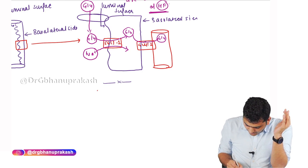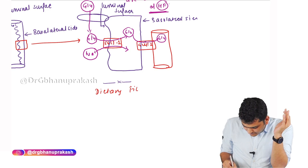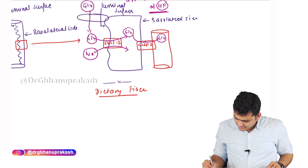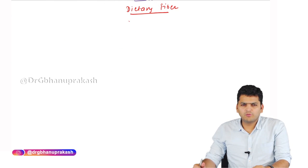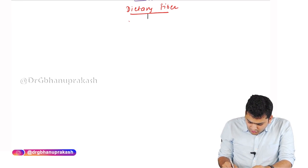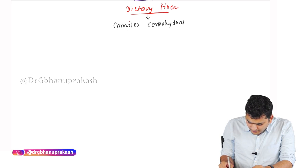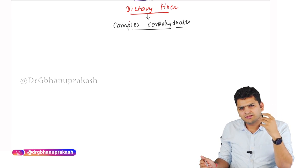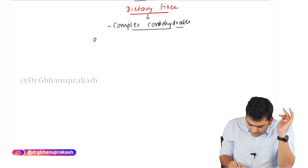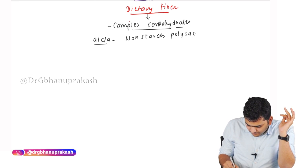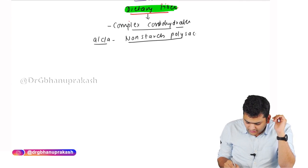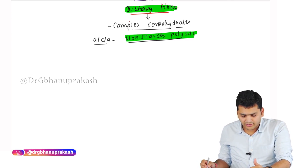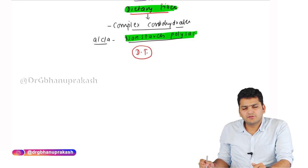The next topic is dietary fibers. Dietary fibers are complex carbohydrates — meaning carbohydrates that cannot be digested by the human digestive system because we lack the enzyme to break them down. They are also called non-starch polysaccharides.